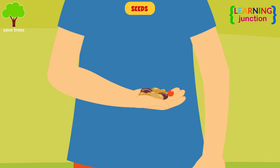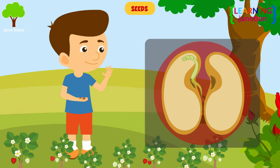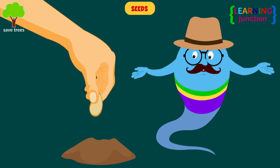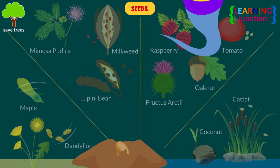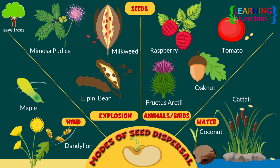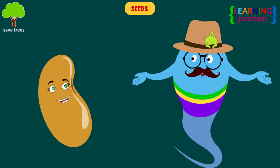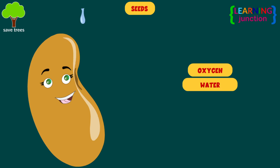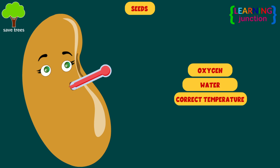Seeds. Seeds contain the embryo of the plant with essential food and an outer coating for protection. These seeds are dispersed across the land in several ways: by wind, explosion, animals and birds, and by water — these are the four main modes of seed dispersal. When they fall on fertile soil with the necessary things such as oxygen, water, and correct temperature, they germinate and start their life's journey.